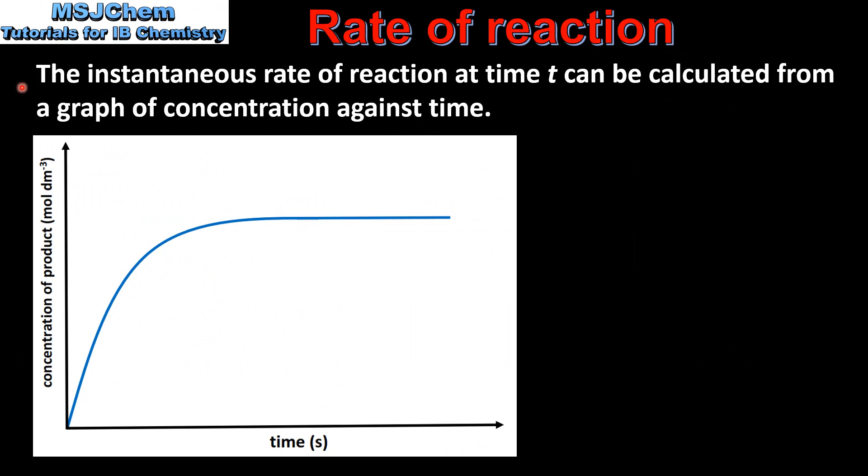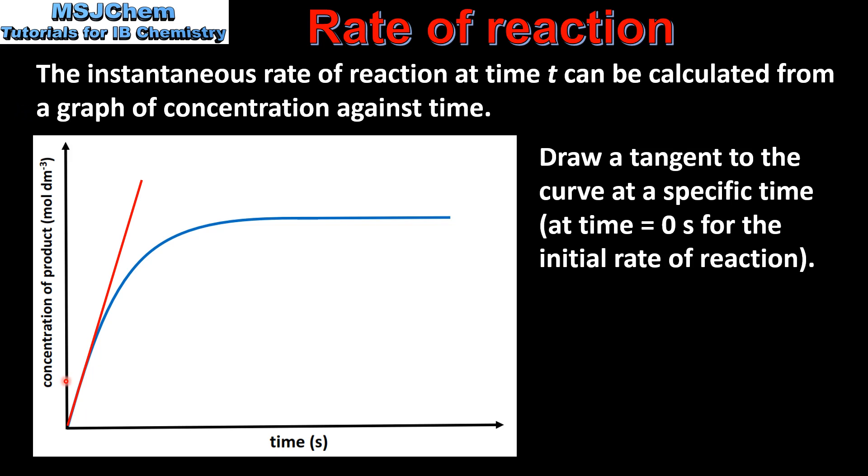The instantaneous rate of reaction at time t can be calculated from a graph of concentration against time. So we start by drawing a tangent to the curve at a specific time. If we want to measure the initial rate of reaction we draw the tangent at time equals zero. We then measure the gradient of the tangent.